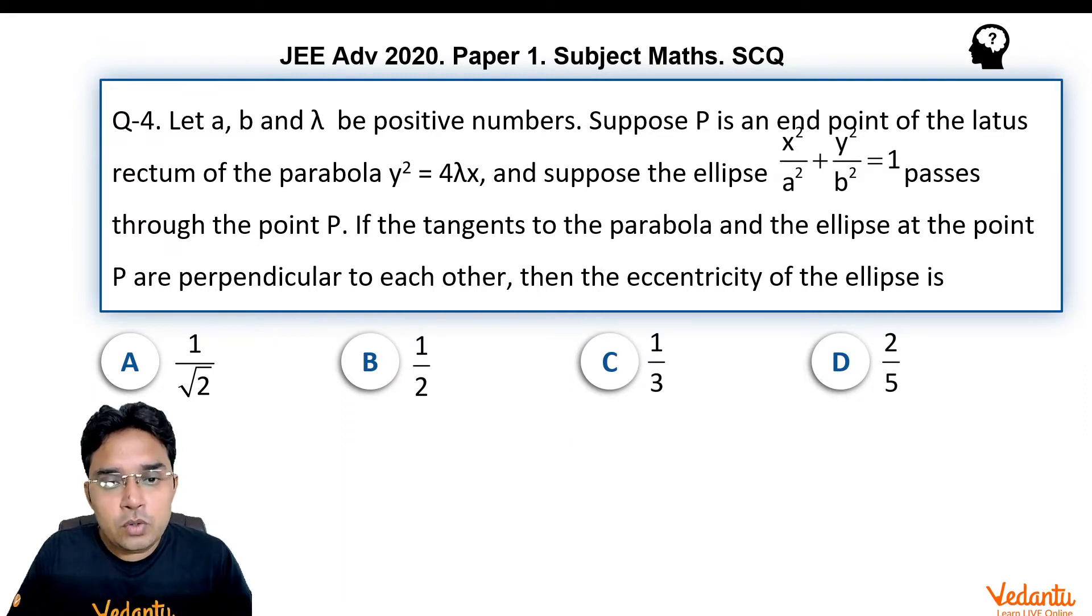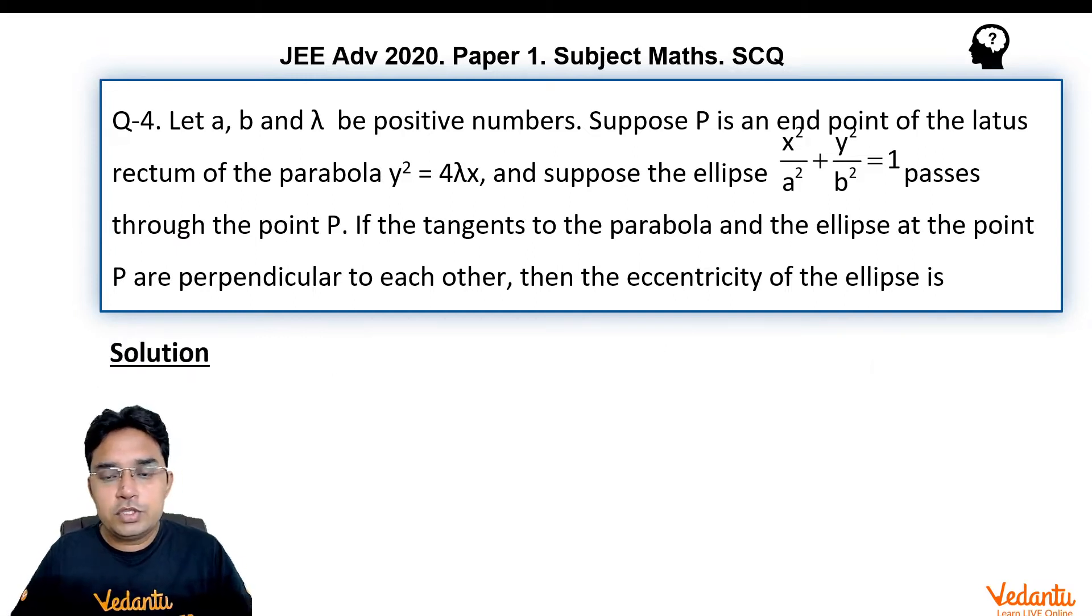Options are 1 by root 2, 1 upon 2, 1 upon 3 or 2 upon 5. So, let us see how to do this question.